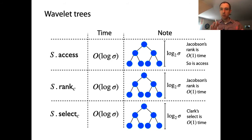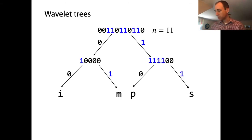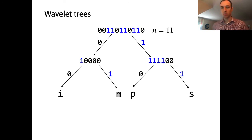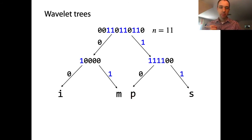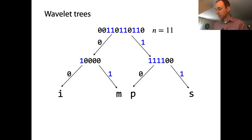With a balanced wavelet tree, all three queries run in O(log sigma) time. Now let's think about space. We were proud of having pared down this data structure — we're not storing the strings at each internal node, just the bit vectors corresponding to the remaining subsequence, and at the leaves just storing the characters. How much are we paying to store the structure of the tree together with the bit vectors labeling the internal nodes?